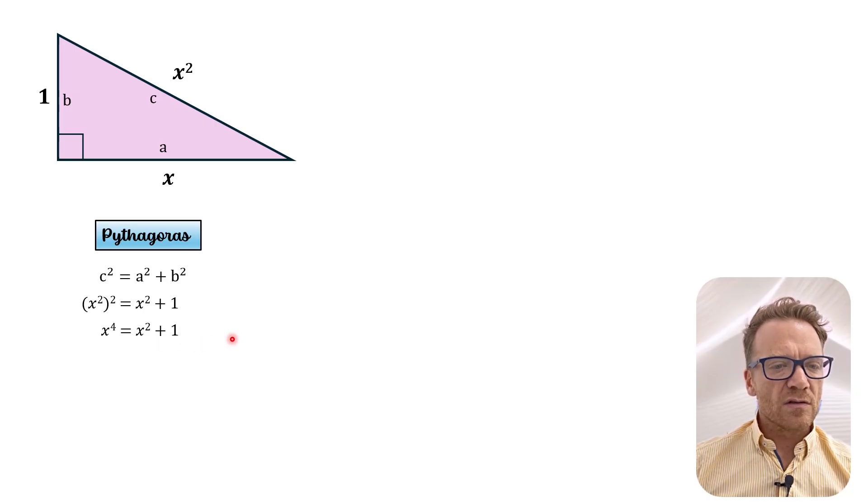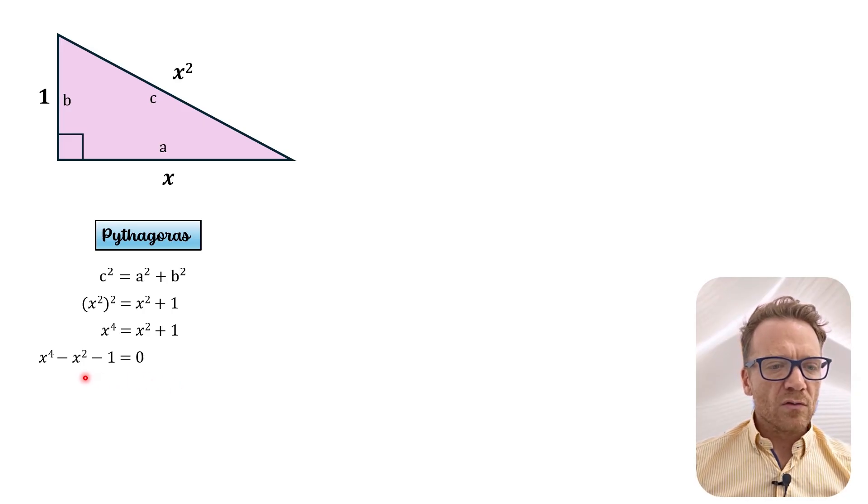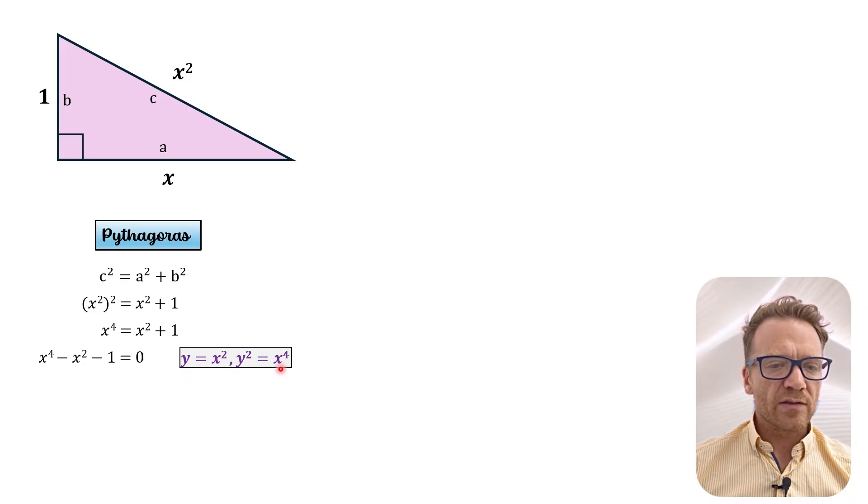All right, let's set this equation equal to 0 by bringing everything over to the left hand side. So x to the power of 4 minus x squared minus 1. And now what we're going to give x squared a value of y which means that y squared would be x to the power of 4. And now we have the following quadratic equation.